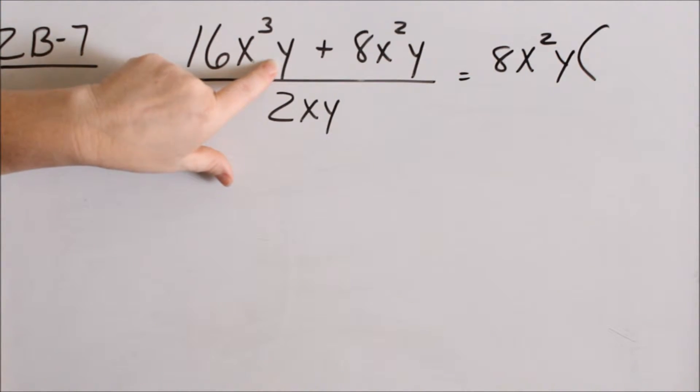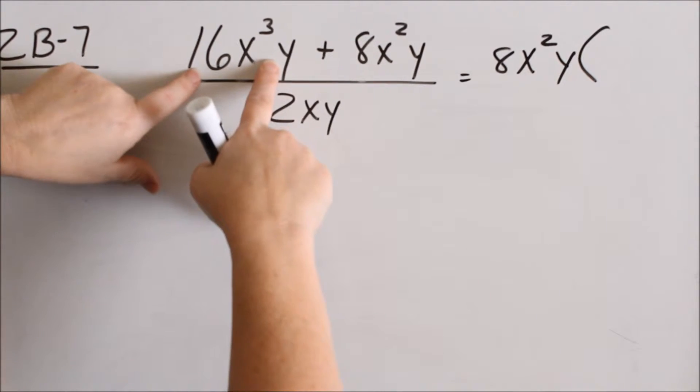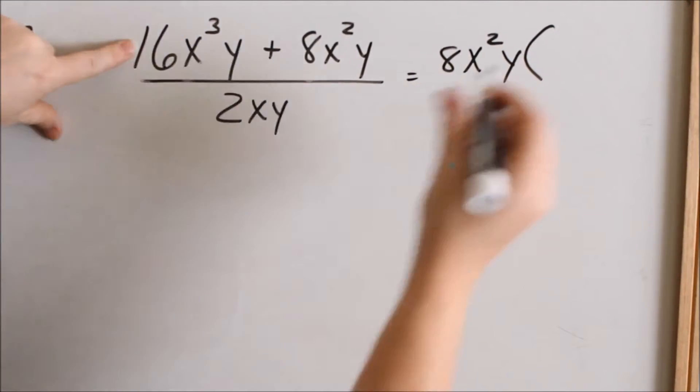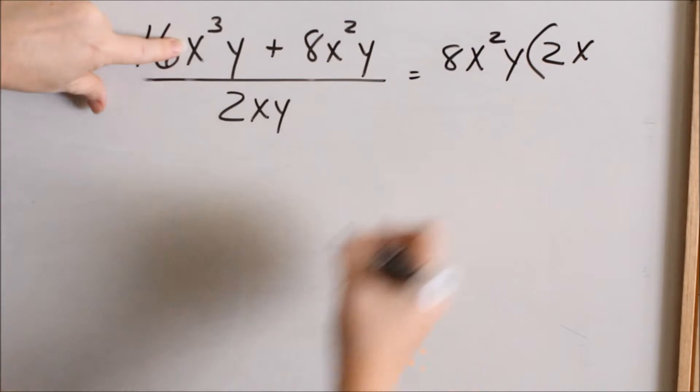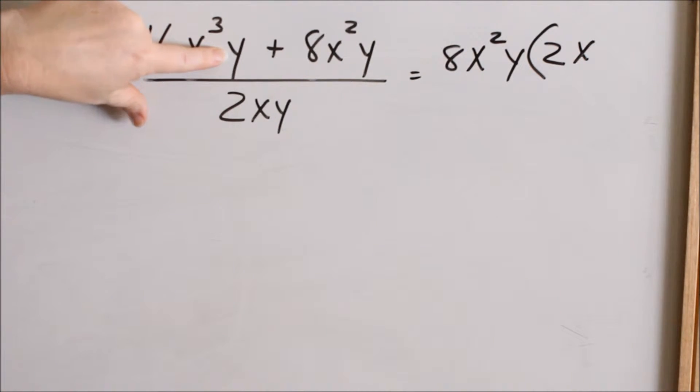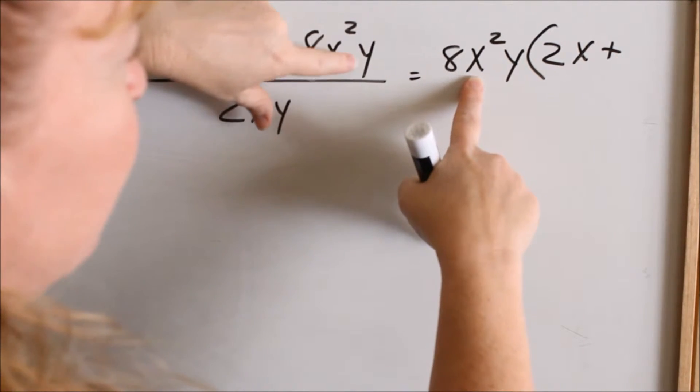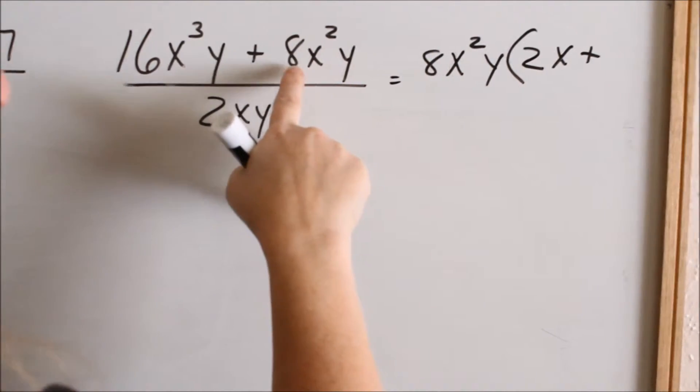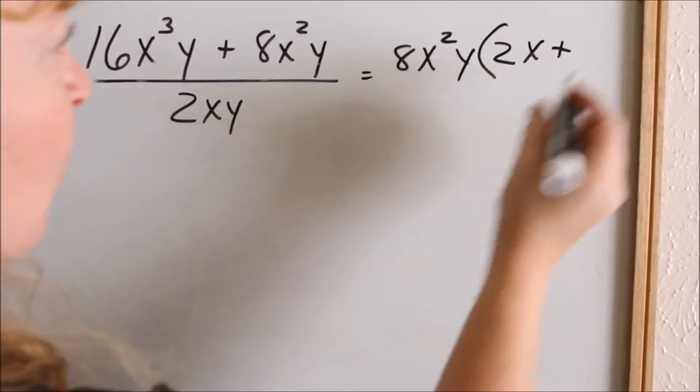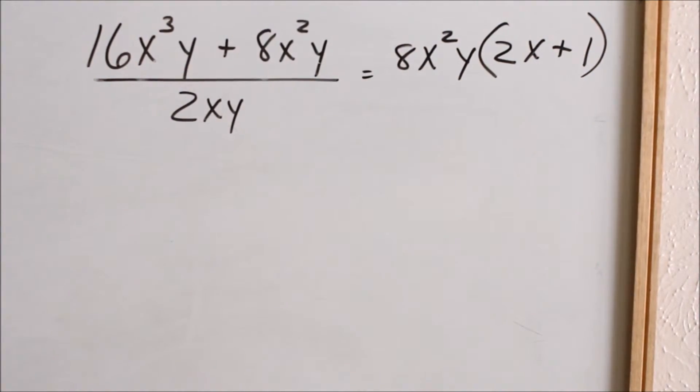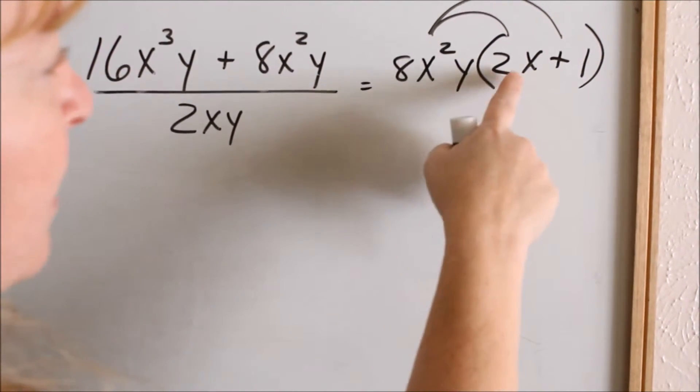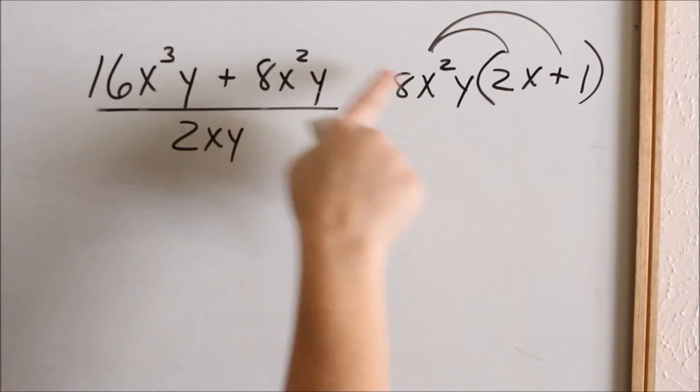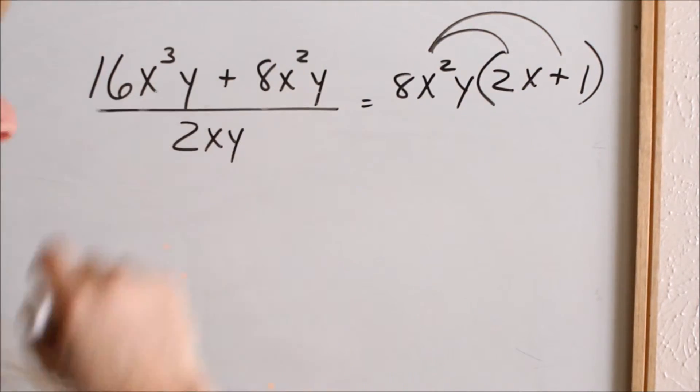Now I'll write what I have left in parentheses. If I divide this term by 8x squared y, well, 16 divided by 8 is 2. x cubed divided by x squared would leave me 1x left. y divided by y is just 1. There's my plus sign. 8 divided by 8, 1. x squared divided by x squared, 1. y divided by y is 1. So if I divide this whole thing, 8x squared y by 8x squared y, I get 1. Do not put 0. When you distribute this back, you should get what you started with. 8x squared y times 2x is 16x cubed y. 8x squared y times 1 is 8x squared y.